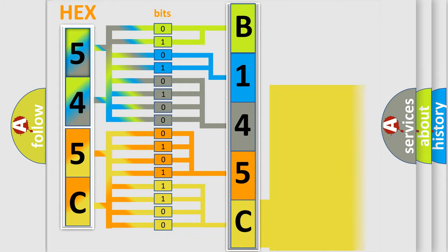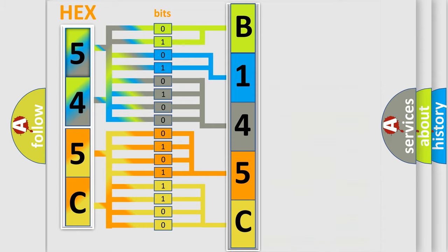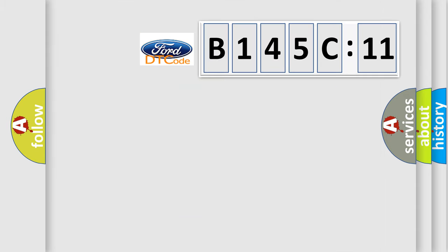A single byte conceals 256 possible combinations. We now know in what way the diagnostic tool translates the received information into a more comprehensible format. The number itself does not make sense to us if we cannot assign information about what it actually expresses. So, what does the diagnostic trouble code B145C11 interpret specifically?